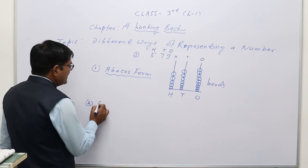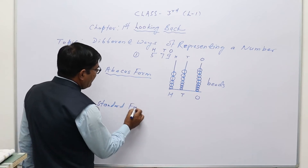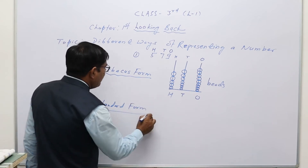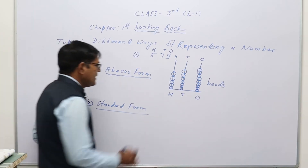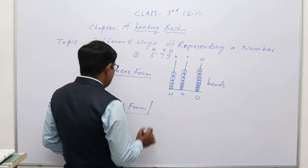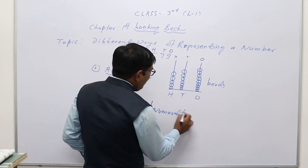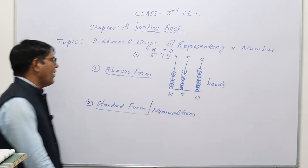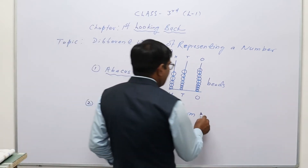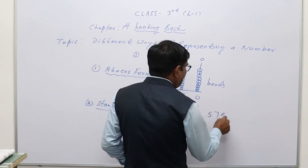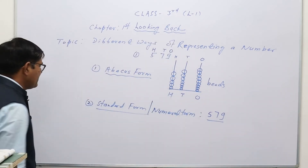The second form is the standard form. In standard form, we write the given number in numeral form. This form is also known as the standard form or numeral form. We have to write the given number in digits, so the number is written as 579. This is called standard form or numeral form.